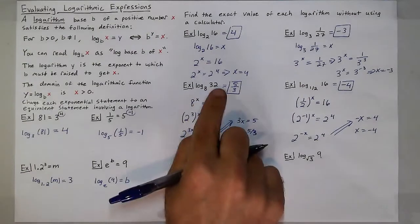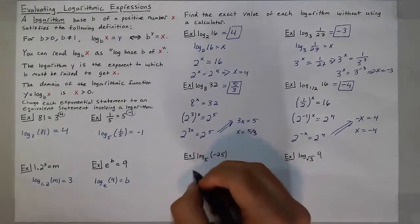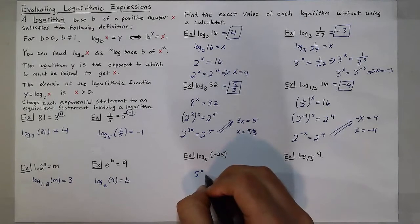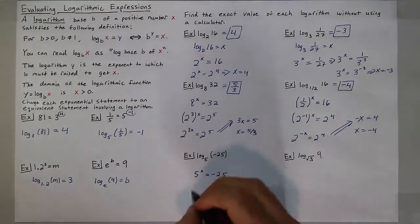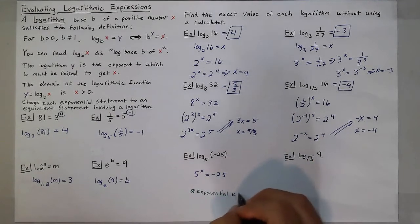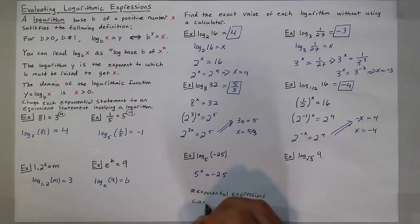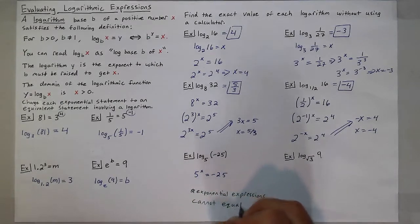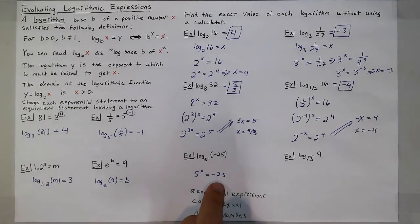So I hope you're catching on to the logarithm is that exponent that you're looking for in all of these problems. So let's look at log base 5 of negative 25. What power do I have to raise 5 to to get negative 25? And a statement comes up here is that exponential expressions cannot equal negative numbers. There's no power I could raise 5 to actually get a negative number, like a negative 25.